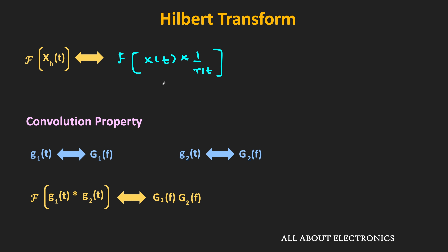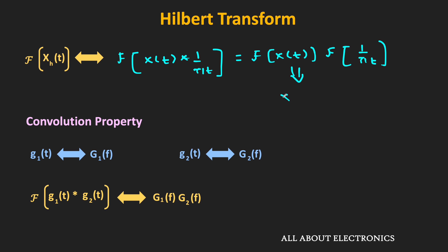So in this case, the Fourier transform of the Hilbert transformed signal equals the Fourier transform of x(t) — let's call it X(f) — times the Fourier transform of 1/(πt). Now let us find the Fourier transform of 1/(πt).